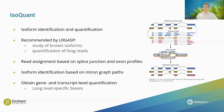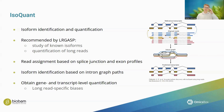IsoQuant performs read assignment based on creating splice junction and exon profiles for each individual read as well as each transcript model in our transcriptome, then looks for matches between them. It can also perform isoform identification — creating models for novel transcripts based on an intron graph and observing the paths that various reads take through this graph. Today we will skip this step since we are already happy with our high-quality refined transcriptome. IsoQuant can also obtain both gene and transcript level quantification results.